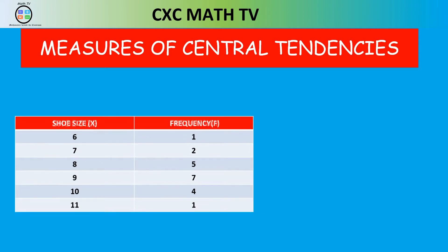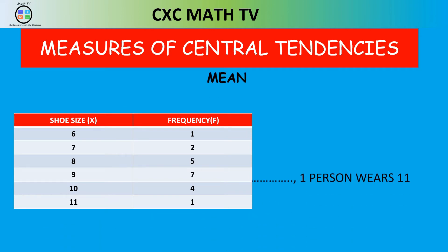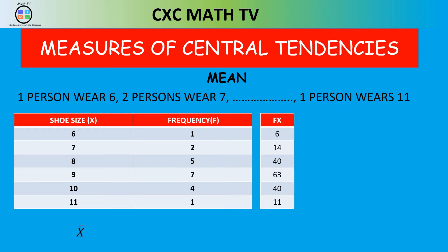When given data in a table, you need the sum of F times X, where F is the frequency and X is the data value — the shoe size. So you create a new F×X column. Calculate: 6×1=6, 7×2=14, 8×5=40, 9×7=63, 10×4=40, 11×1=11.